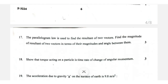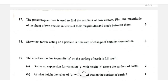Question number 17: parallelogram law of vector addition. The resultant R equals the square root of a squared plus b squared plus 2ab cos theta. Find the magnitude of the resultant of two vectors using this formula.